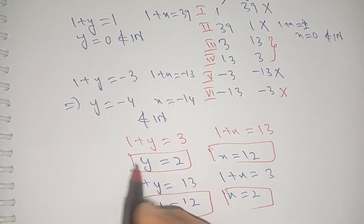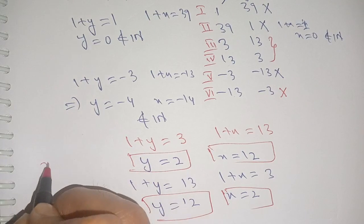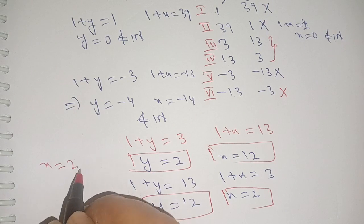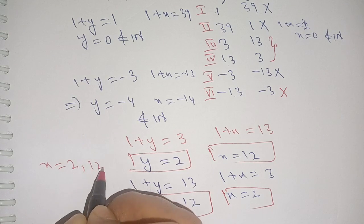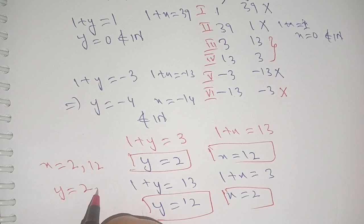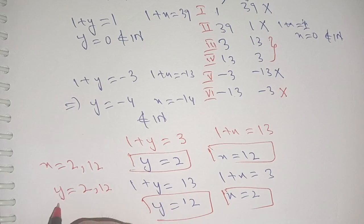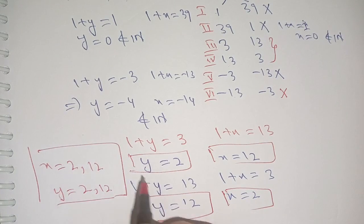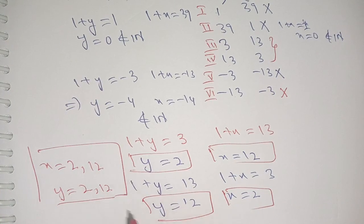In both cases, the values belong to the natural numbers. Thus the value of x is either 2 or 12, and the value of y is either 12 or 2 correspondingly.